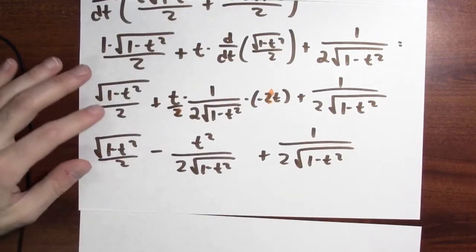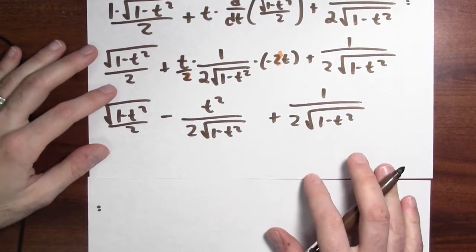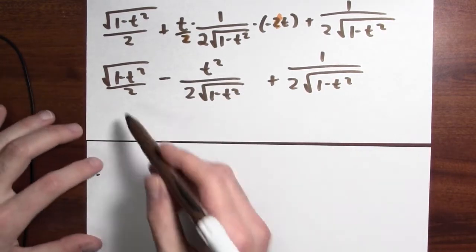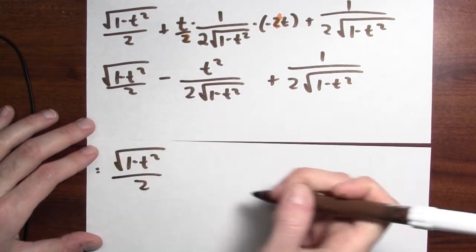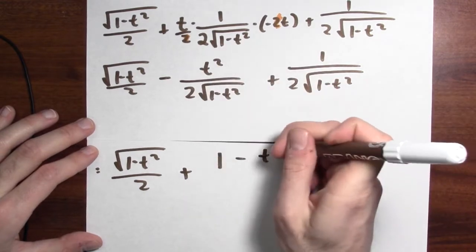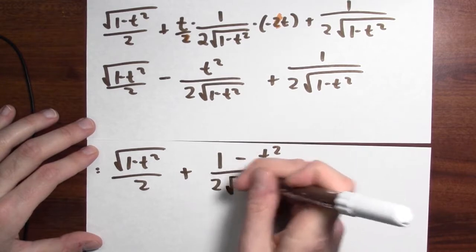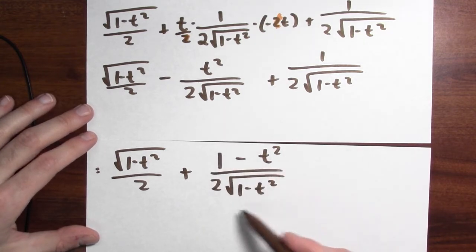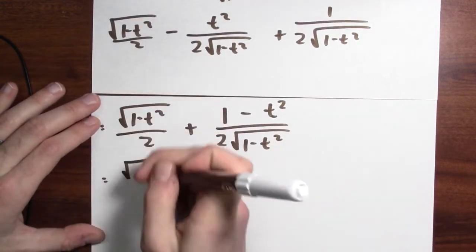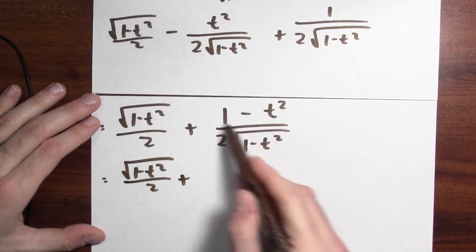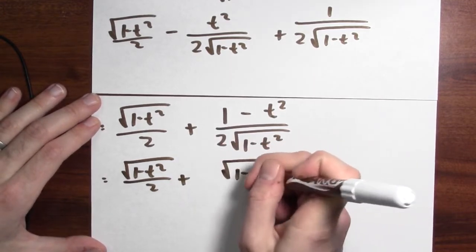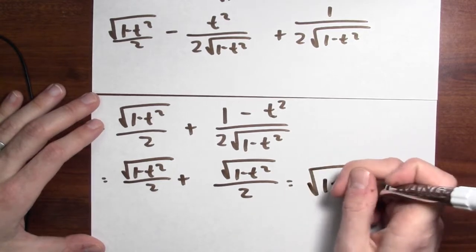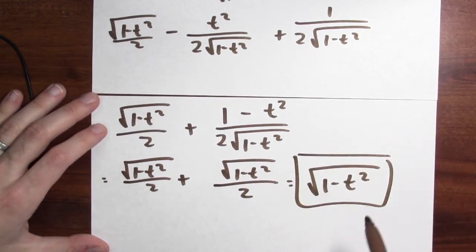Now I can simplify. I've got a minus 2 and a 2 that will cancel, leaving the square root of 1 minus t squared over 2, minus t squared over 2 times the square root of 1 minus t squared, plus 1 over 2 times the square root of 1 minus t squared. Combining the last two terms over the common denominator 2 times the square root of 1 minus t squared gives the square root of 1 minus t squared over 2, plus the square root of 1 minus t squared over 2. That's just the square root of 1 minus t squared — we've made it to our goal.